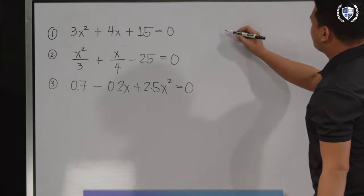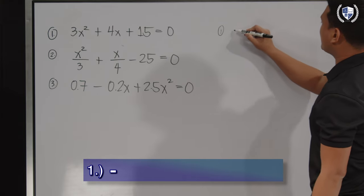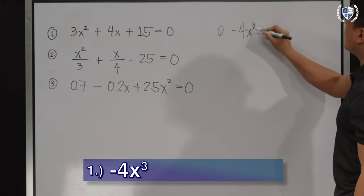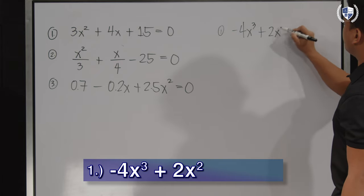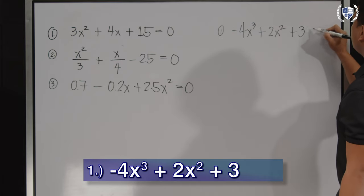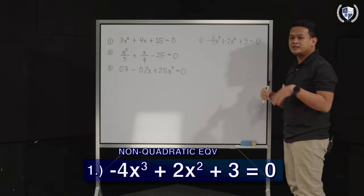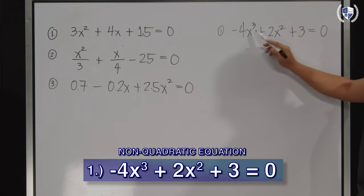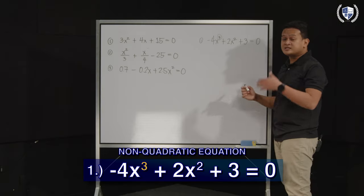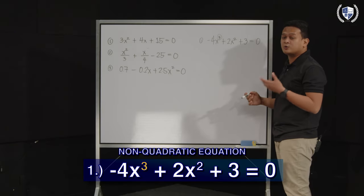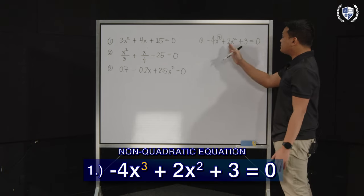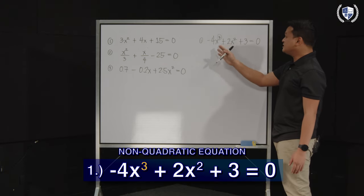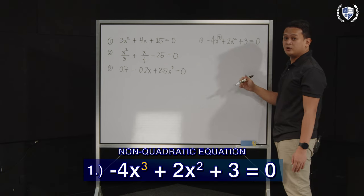So, for the first one, let's say you have -4x³ + 2x² + 3 = 0. So, the question is, why is this not an example of a quadratic equation? Because we see here a term where the exponent of x is already 3. And it is stated in the definition of our quadratic equation that the exponent of variable x cannot be greater than 2.